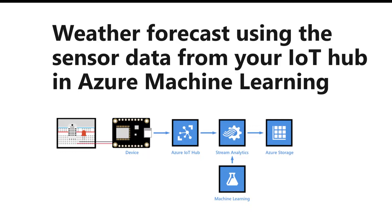In this demo we are going to leverage a Raspberry Pi simulator and send messages to IoT Hub. Then using Stream Analytics and Machine Learning Studio we are going to predict what is the chance of rain happening. These IoT devices are going to send us the temperature and humidity, and based on those two factors we are going to decide if rain is going to happen, then persist the result into storage for alerting, visualization, or any other purpose.